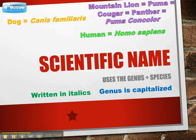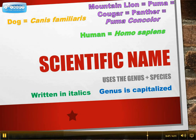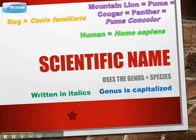Why do we want scientific names? Because people all over the world have different names for the same creature. You might call something a mountain lion, I might call it a cougar, you might call it a puma or a panther. Someone who isn't in the know might think we're all talking about different creatures, when really it's the exact same cat. So we call it by its Latin scientific name — Puma concolor, or basically 'cat with color.' That's what you need to know about scientific names: it uses the genus and species level, the most specific levels of the taxonomy chart. The genus always comes first and is always capitalized.